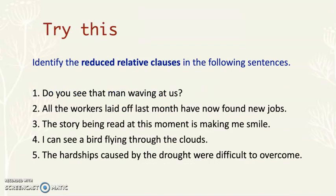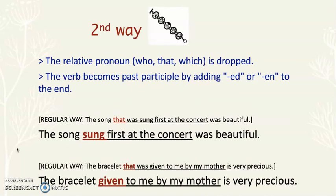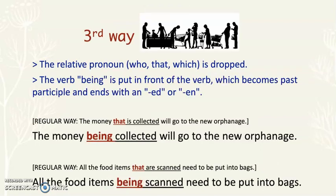So we looked at three different ways to make reduced relative clauses. The first way: we dropped the relative pronoun and the verb becomes progressive by adding -ing. The second way: we dropped the relative pronoun and the verb is past participle by adding -ed or -en, or we left the past participle verb as-is. The third way: we dropped the relative pronoun and put the word 'being' in front of the past participle verb, like 'being collected' or 'being scanned.'